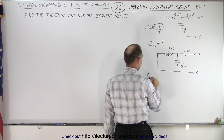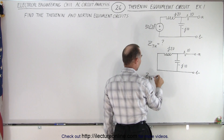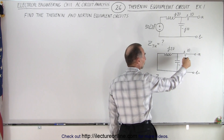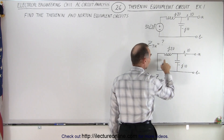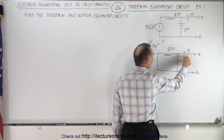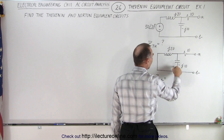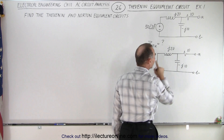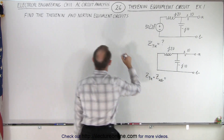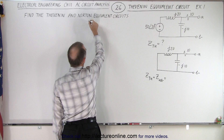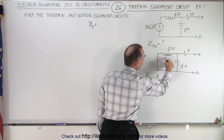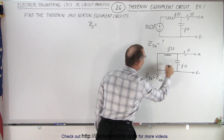Z_Thevenin equals Z from A to B. You can see that there is a parallel circuit right here — from A around to B we go through the 10-ohm resistor, and then we have an impedance in parallel. So first we'll find the parallel impedance.